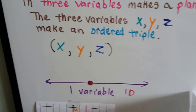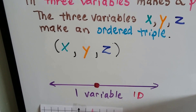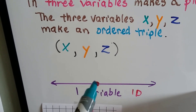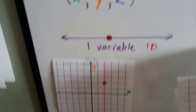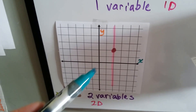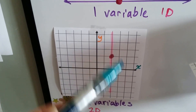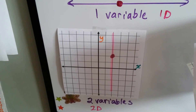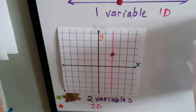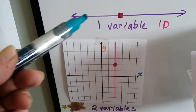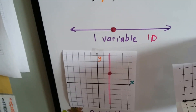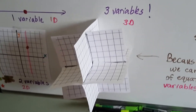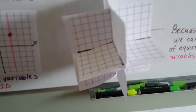When we have one variable, like x, then we have a 1D line, and we have a point on that line. When we have two variables, it makes a 2D plane, like where x and y meet — like a sheet of paper. When we have three variables, we have 3D, and it would actually be graphed on a plane that looks like this.